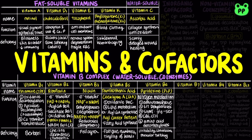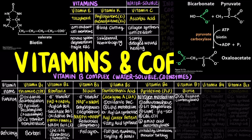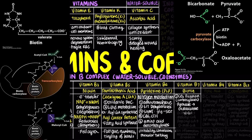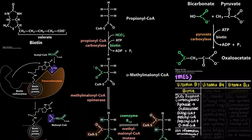Vitamin B7, also known as biotin, facilitates carbon dioxide fixation in carboxylases, converting pyruvate to oxaloacetate during gluconeogenesis, acetyl-CoA to malonyl-CoA during fatty acid biosynthesis, and propionyl-CoA to D-methylmalonyl-CoA during ketogenic amino acid and odd-chain fatty acid catabolism. Deficiency in vitamin B7 results in skin inflammation and neuromuscular disorders.